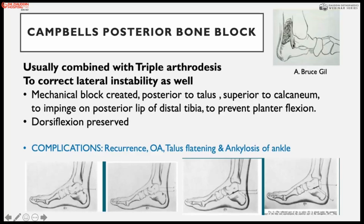In the posterior bone block, no arthrodesis of the ankle joint is performed; instead a bone block is created on the superior surface of the calcaneum so that the foot cannot go further into equinus. A trough is created and bone graft is placed so the foot cannot adopt the equinus position. Complications include talus flattening and ankle ankylosis.